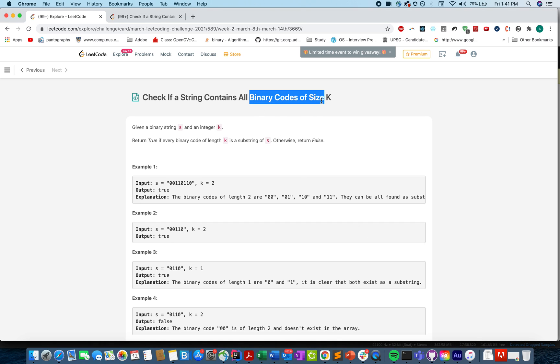So in this question you are given a binary string and integer k. You need to check whether for every binary code of length k is a substring of the given input string s. If all the binary codes are part of this string s then we need to return true, otherwise we need to return false.